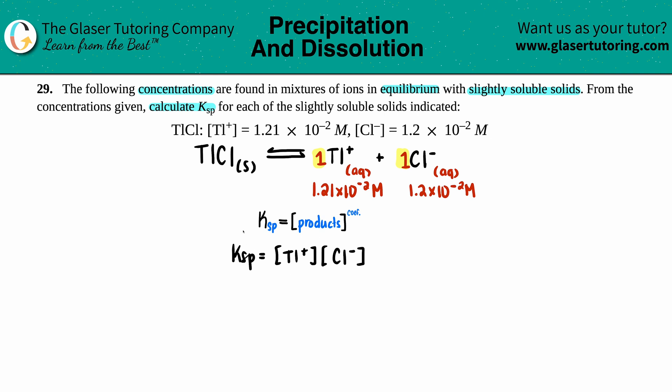And now we know the values, right? We want to solve for that Ksp. So we know the Tl+ is 1.21 times 10 to the negative second, and the Cl- is 1.2 times 10 to the negative second.